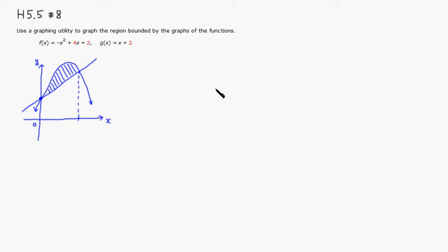Let's look at homework 5.5 number 8. If you sketch the graph of these two functions, they're going to look like this. You have a quadratic function, which gives you a parabola. Since it's a negative leading coefficient, we have a facing down parabola. And then you have a straight line with slope 1, y-intercept 2. So that's this guy right here.